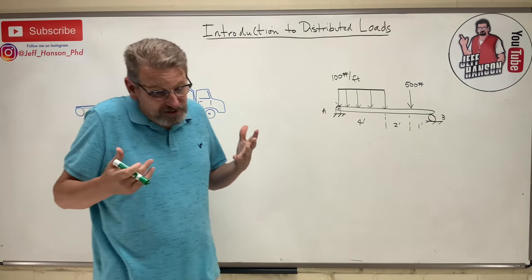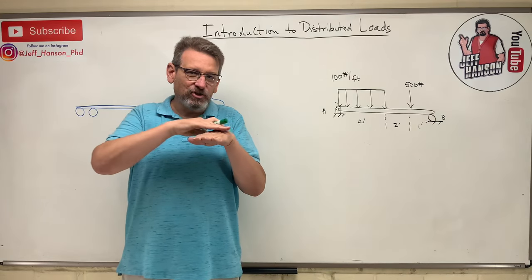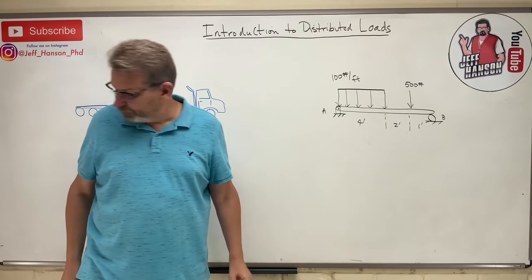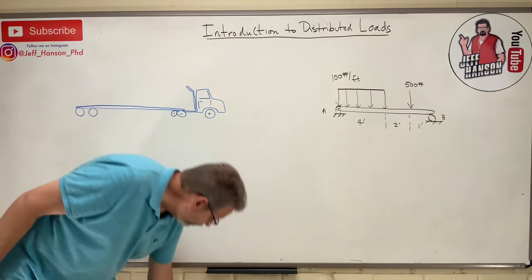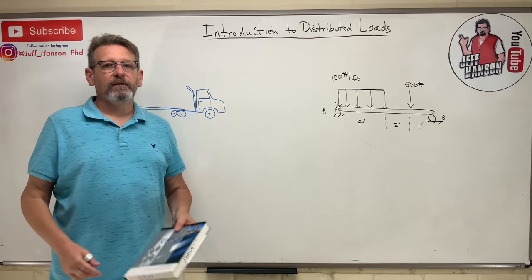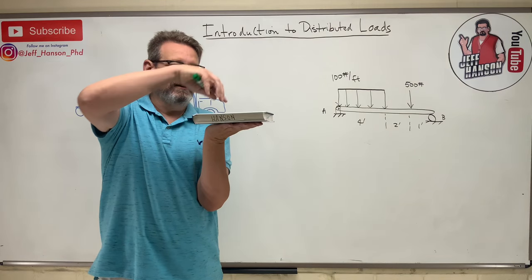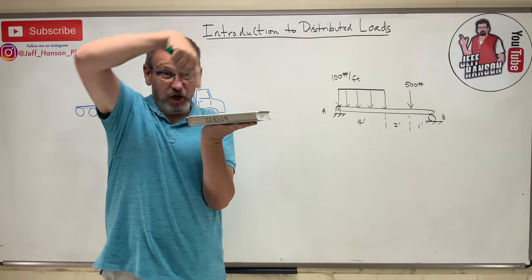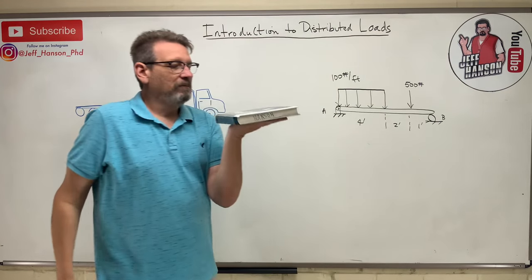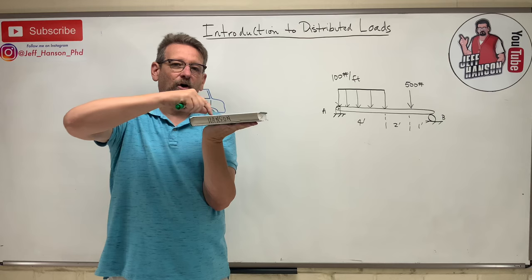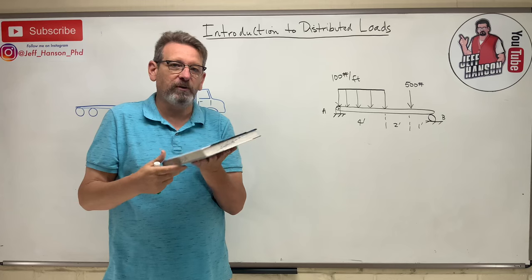So when you say a distributed load, what is a distributed load? Well, it's like me standing on the floor. My weight is distributed over the size of my foot. Or it's like this textbook. If I lay this textbook on the table, this textbook has weight, but that weight is not a point load or a concentrated load like we've been used to. This book actually has the weight spread out all over the whole thing. So that weight is distributed across an area. That's why we call it a distributed load.